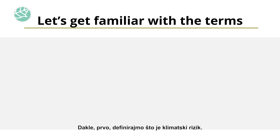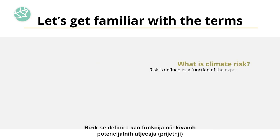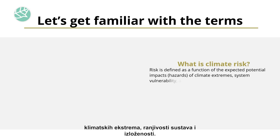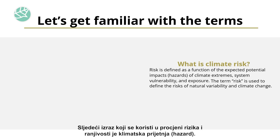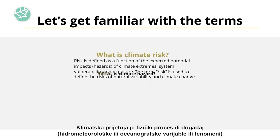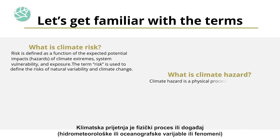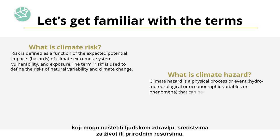First, let's define what a climate risk is. Risk is defined as a function of the expected potential impacts of a hazard of climate extremes, system vulnerability, and exposure. The term risk is used to define the risks of natural variability and climate change. The next term is climate hazard. Climate hazard is a physical process or event, hydrometeorological or oceanographic variable or phenomenon that can harm human health, crops, livelihoods, or natural resources.